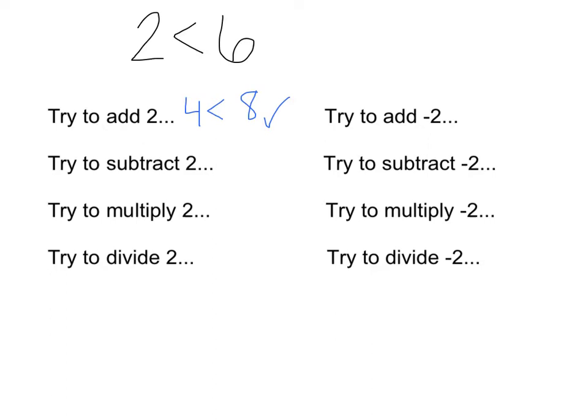If we subtract positive numbers — if you subtract 2 from both sides, you get 0 is less than 4. Well, 0 is less than 4, so subtracting is fine. Now multiplying both sides by 2: 2 times 2 is 4, 6 times 2 is 12, 4 is less than 12, so that's fine. Dividing both sides by 2: 2 divided by 2 is 1, 6 divided by 2 is 3, 1 is less than 3, so that's fine.